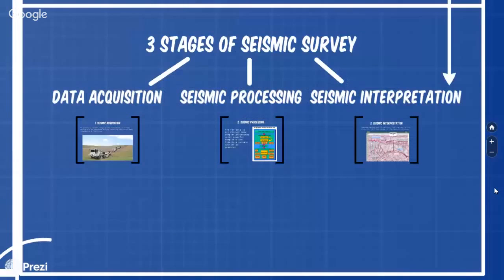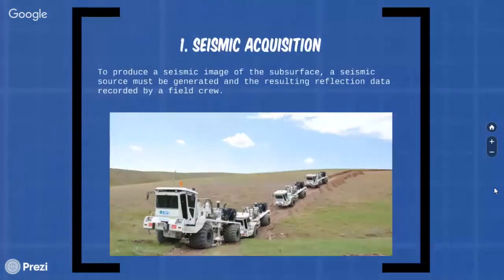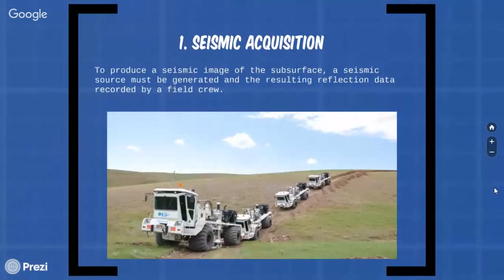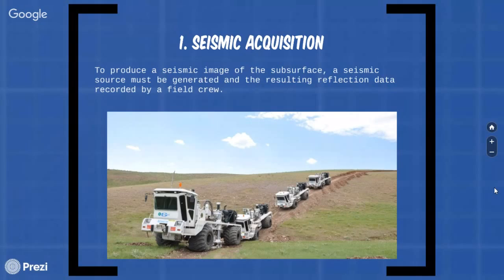There are three stages of seismic survey: Data acquisition, seismic processing and seismic interpretation. Let's start with seismic acquisition. It is used to produce a seismic image of the subsurface. A seismic source must be generated and the resulting reflection data recorded by a field crew. In this way, land and marine seismic data is created and recorded all over the world.